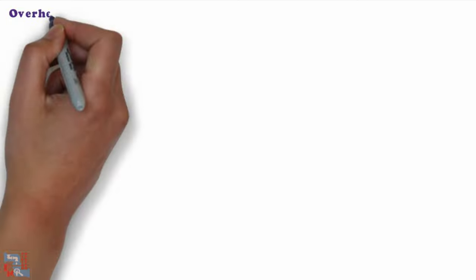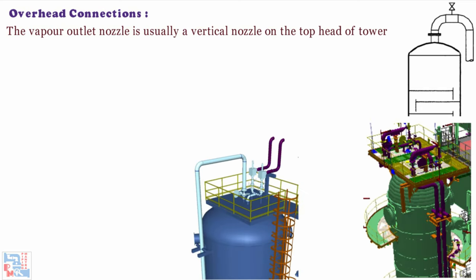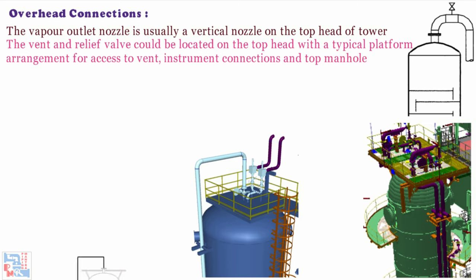Now let's discuss about overhead connections. The vapor outlet nozzle is usually a vertical nozzle on the top head of tower. In addition, the vent and relief wall could be located on the top head with a typical platform arrangement for access to vent, instrument connections and top manhole.